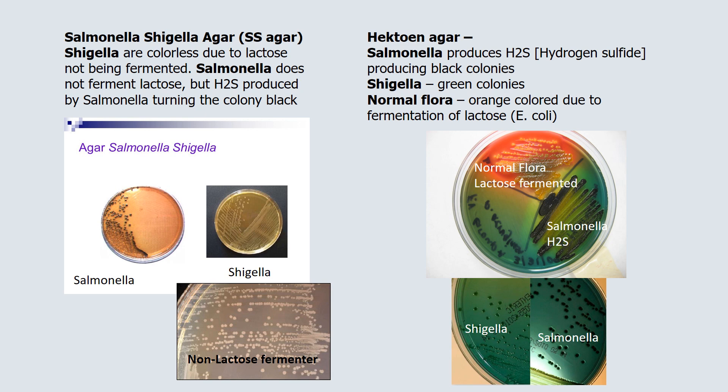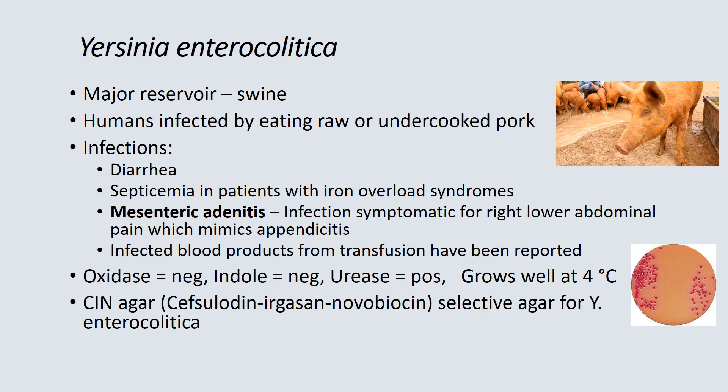Special agars can be used for stool cultures to detect Salmonella and Shigella. Historically, Salmonella-Shigella agar was used, where Shigella produces a colorless colony and Salmonella produces black colonies due to H2S production. Over the last 25 years, Hektoen agar has been preferred for clearer color differentiation — salmonella produces black colonies, Shigella will be green, and normal flora like E. coli will be orange.